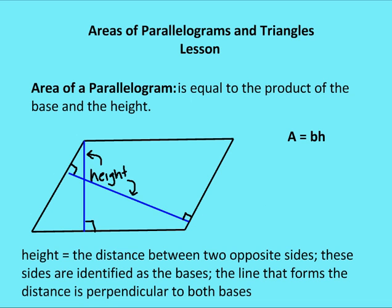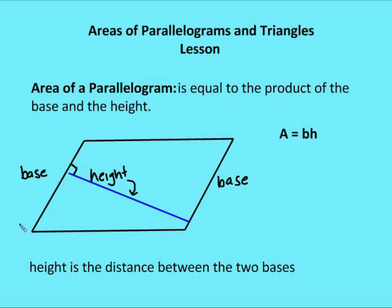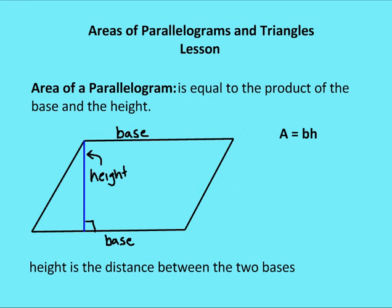Let's see how this plays out in this parallelogram. The base here is going to be from A to B and also from C to D, and the height is given in the blue line. The base is defined by the height, and the height and the bases work together. So you wouldn't have a base CD and AB and then a height from BC to AD. If the height is the blue line, then the base becomes BC and also AD. Height is the distance between the two bases — BC and AD must be the base if the height in question is the blue line.